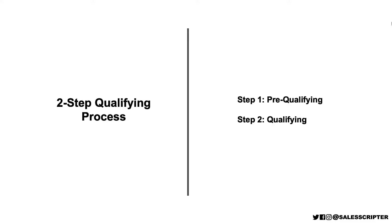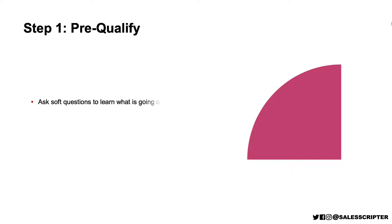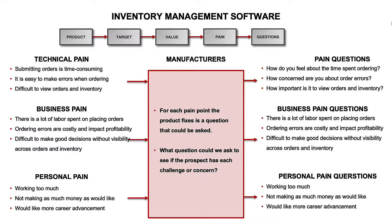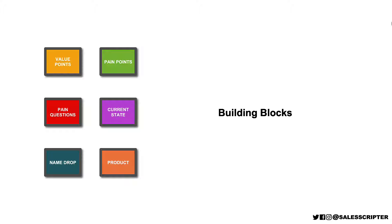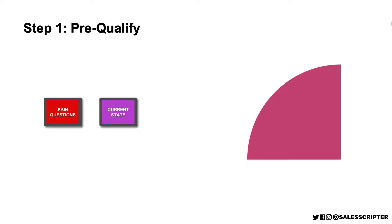Step one is pre-qualifying. Step two is qualifying. Pre-qualifying is identifying whether the prospect is in the general area of a potential fit. All we're trying to do is ask a few questions to generally learn what's going on. Our goal is just to identify — does it even make sense to talk at all? Your pain questions and current state questions are extremely effective and efficient at pre-qualifying the prospect.